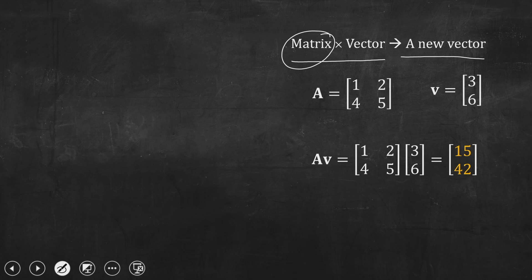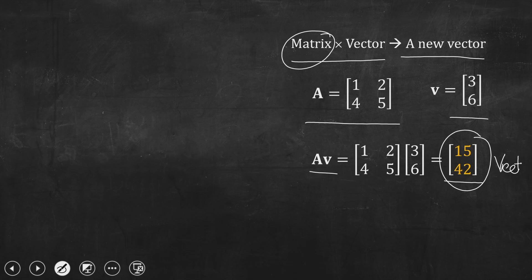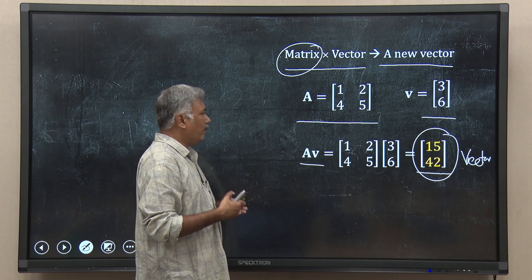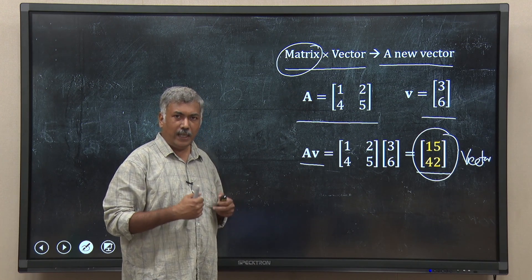For example, take matrix A as [1, 2; 4, 5] and vector v as the column vector [2, 3, 6]. I multiply A by v and what do I get? I get [15, 42]. So this is another new vector. I can convert one vector to another by multiplying it with a matrix.